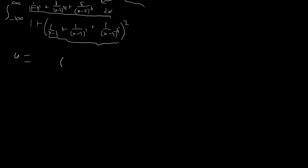So we're going to end up with the integral — all we have to do is plug in these numbers. When we plug in negative infinity, all of these things on the bottom are just going to go to infinity, so it's going to go to zero. And when we go to positive infinity, that's going to be the same case. So we have the integral from zero to zero, which doesn't really make any sense, of negative du over one plus u squared.